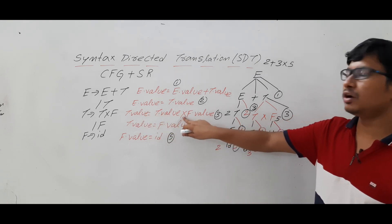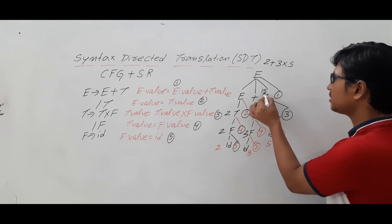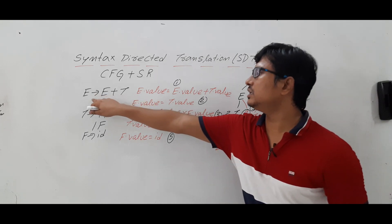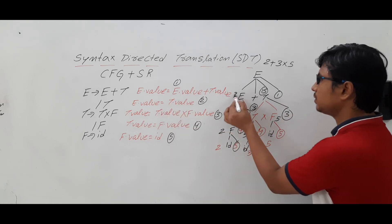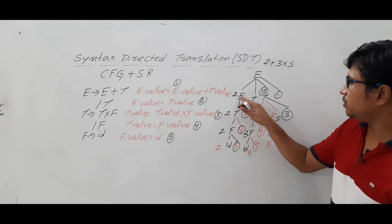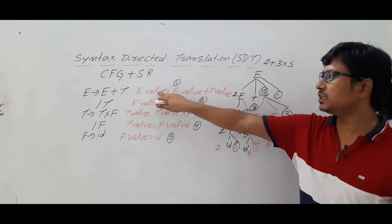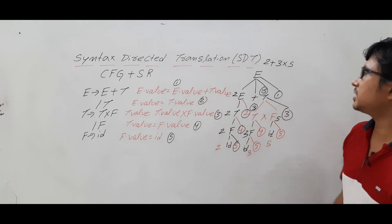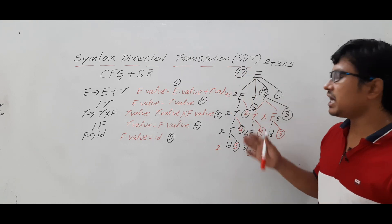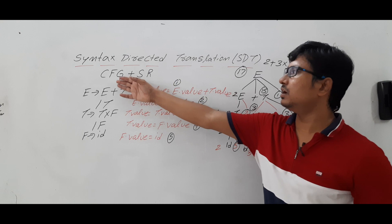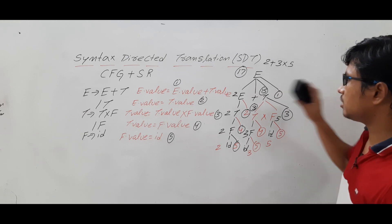For T star F, semantic rule number three says T dot value is equal to T dot value into F dot value, which is 3 into 5, giving you 15. Then E determines T: E dot value is equal to T dot value, so you get 2 here. Finally, for E plus T, rule number one gives E dot value is equal to E dot value plus T dot value — you get 17. This is the syntax directed translation for the given grammar and semantic rules.